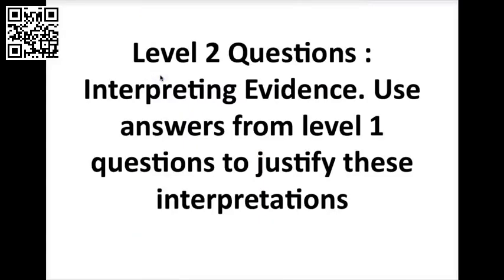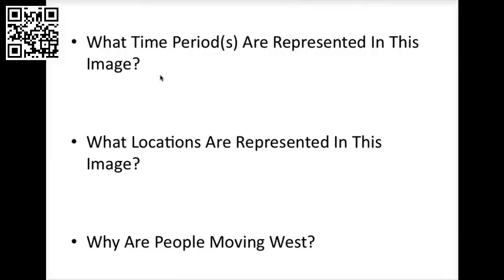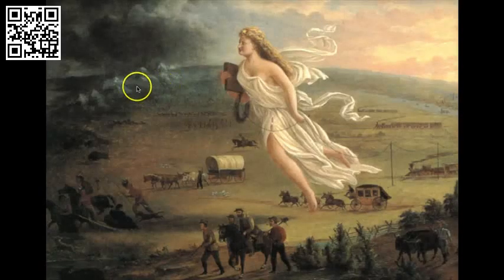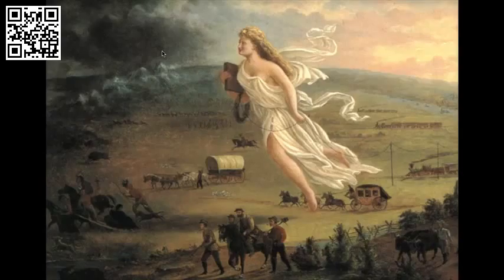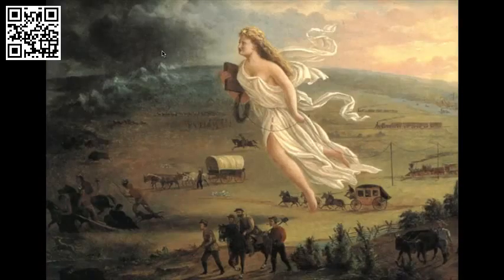Level two — let's interpret the evidence and use the evidence from level one questions to justify our interpretations. What time periods are represented? What locations are represented? And what are the motives of the people moving west? When you consider the time periods, think about the technology that you listed in the previous level to give you a time range for this image. For the locations, think about the geographic features. And for the motives of the people moving west, think about the different groups and their possible professions.